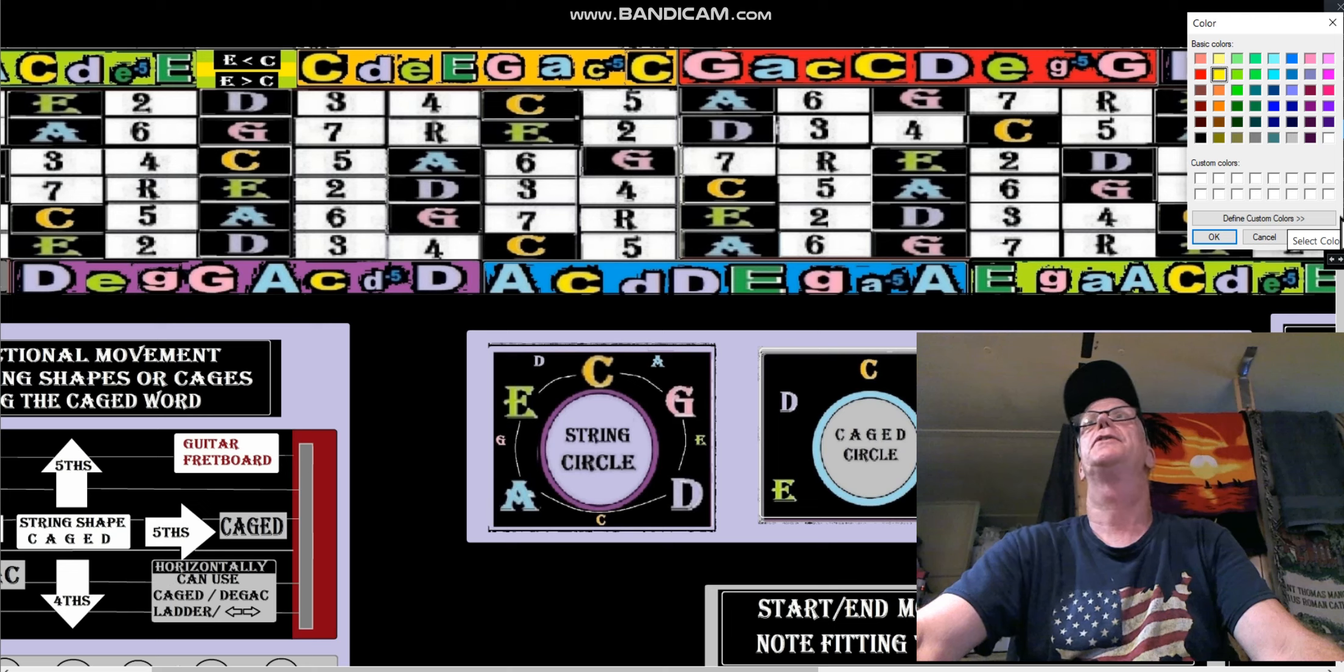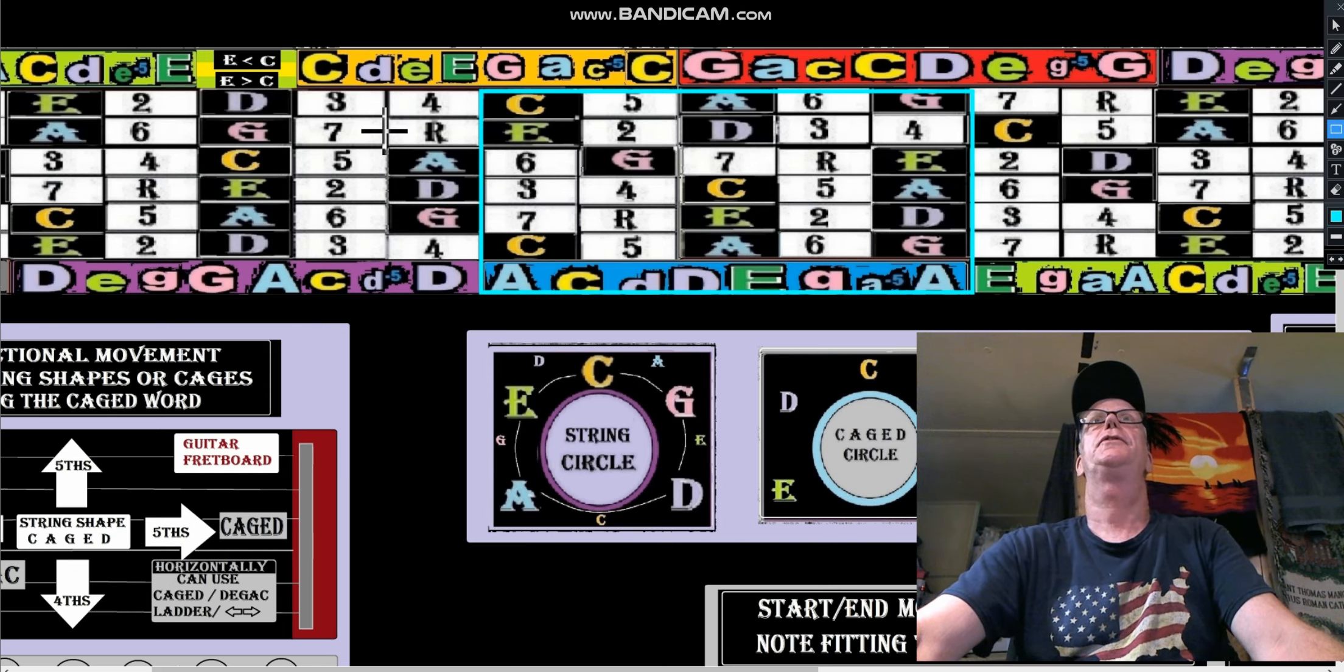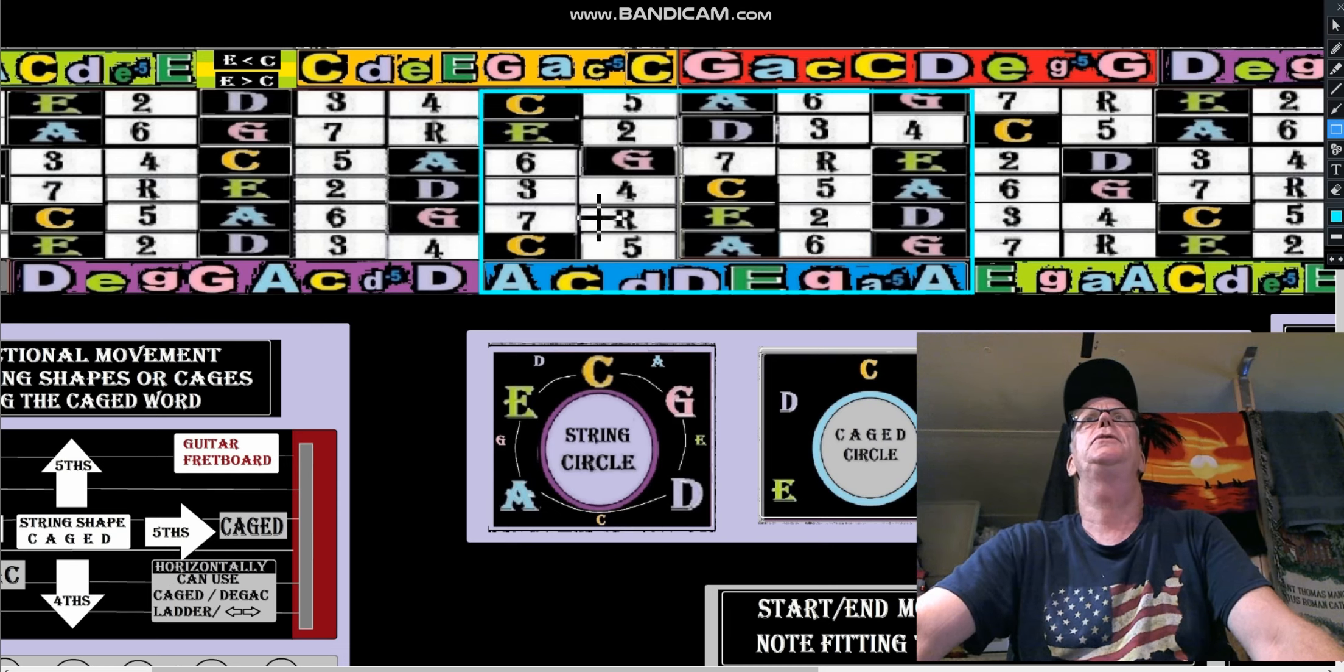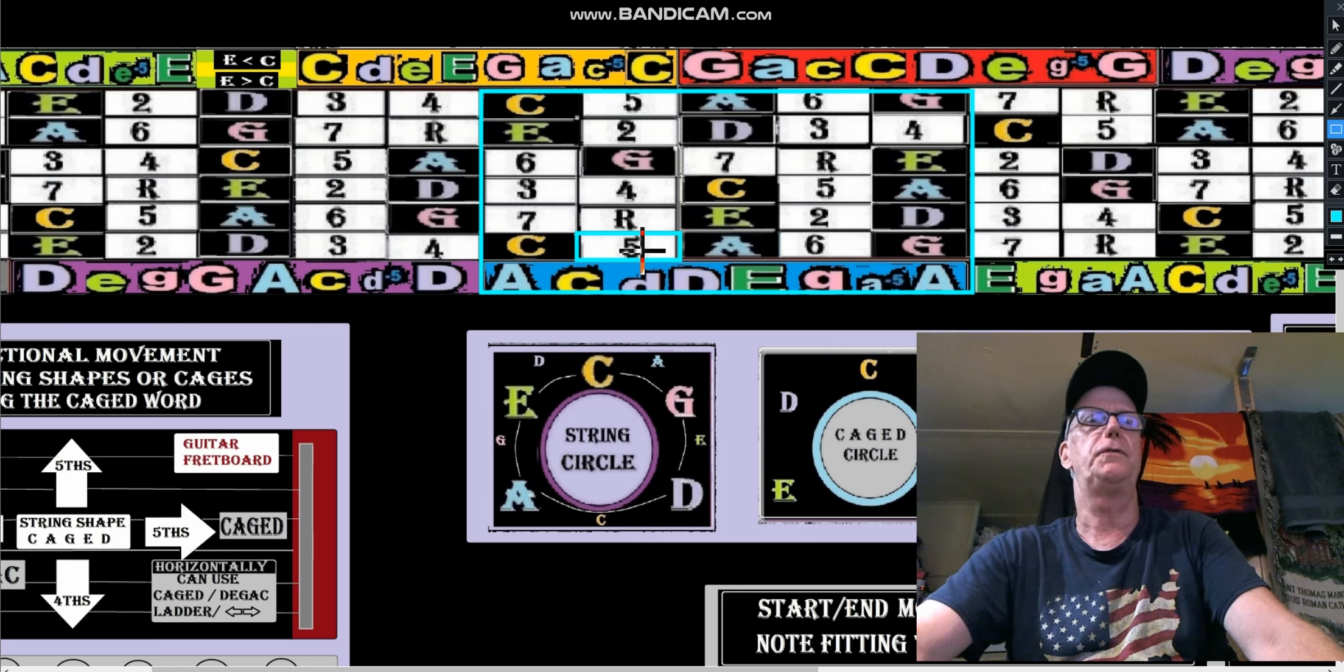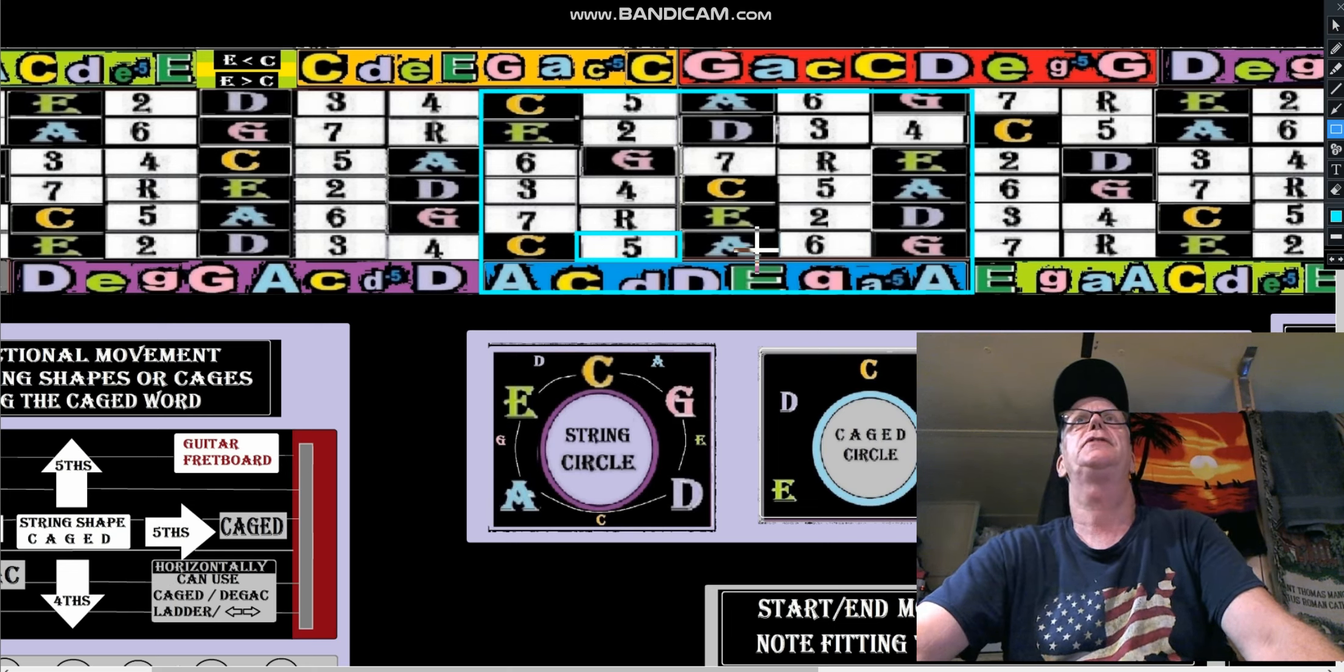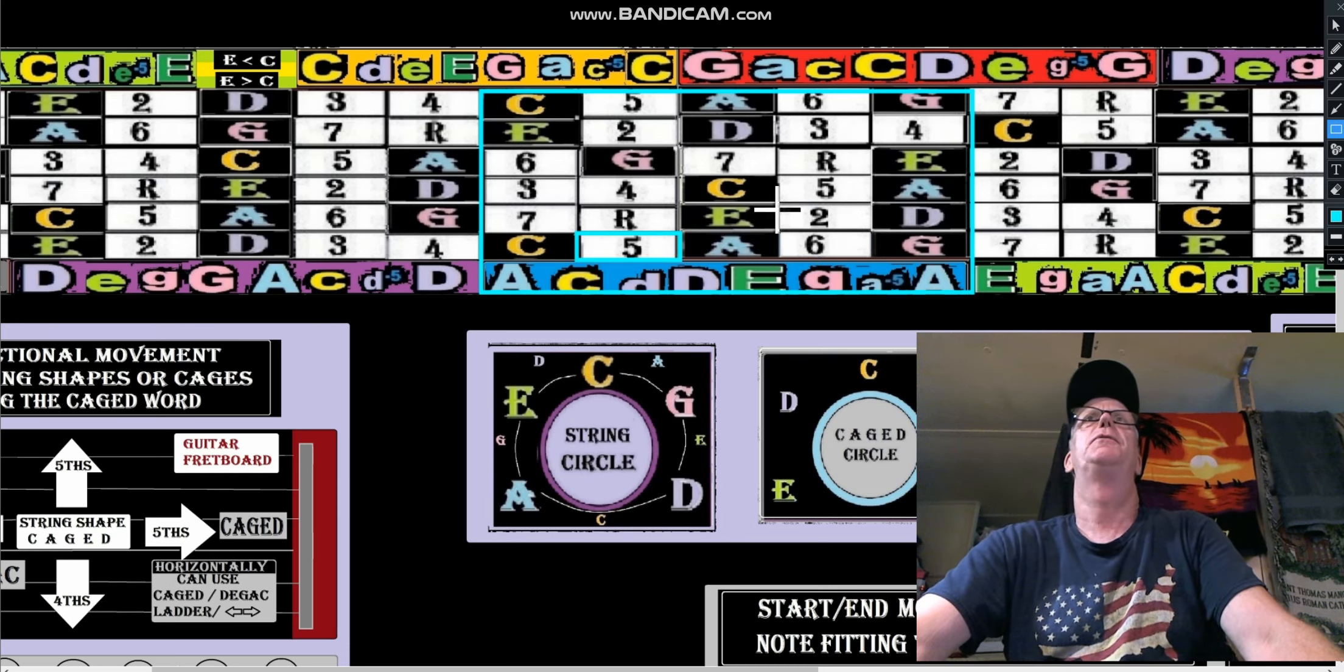Let's look at the A shape - I guess it's in blue so we'll just use light blue for that. This would be the A shape box now. Notice it shares two frets with the C box, so we can use that. It shares the fifth - the fifth is what's shared between the A box and the C box. That's part of note fitting because it's an end note in the C string shape and in the A string shape it's a beginning note if we're playing an increasing scale.